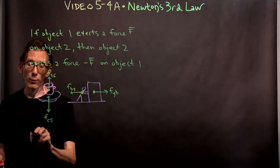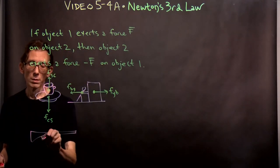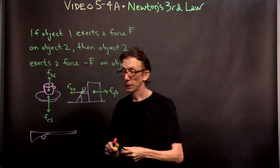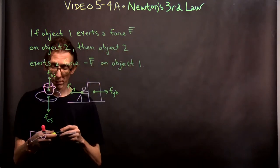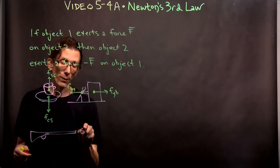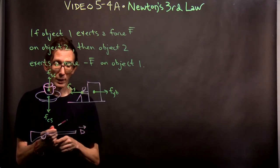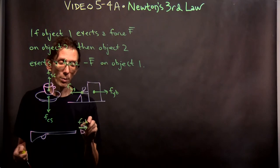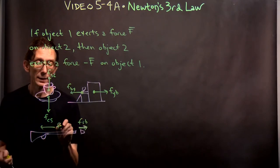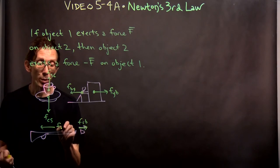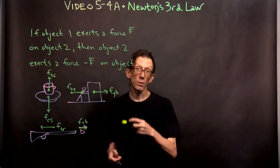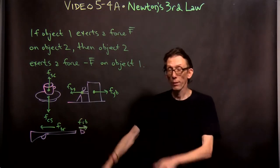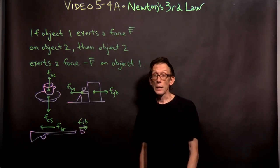If you've ever shot a rifle — particularly a larger caliber rifle — the bullet feels a force: there's a force of the rifle on the bullet. But there's also a force back of the bullet on the rifle, known as a kick. A larger caliber rifle will kick, and you need to hold it firmly to your shoulder. Equal and opposite forces.